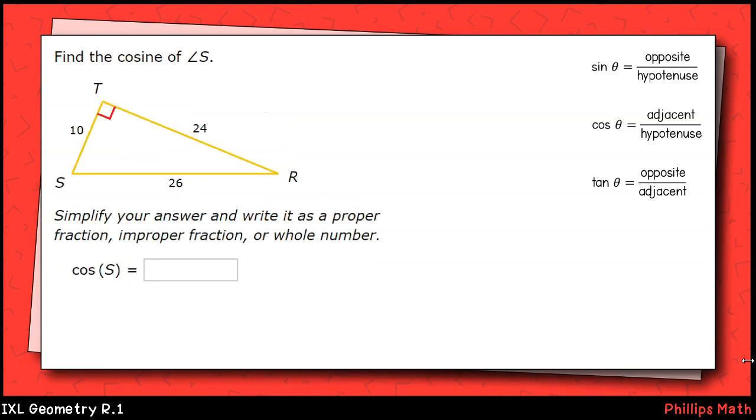The second question asks us to find the cosine of angle S. Once again, our answer should be given in simplest fraction form. The cosine of an angle is the ratio between the side adjacent to that angle and the hypotenuse of the right triangle. For angle S, that will be 10 over 26. This fraction will simplify down to 5 13ths. 5 13ths will be our final answer.